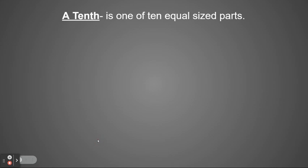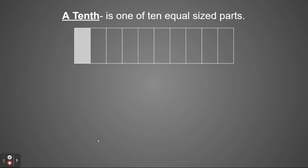First let's look at some vocabulary terms that we need to know. A tenth is one of ten equal parts. We've talked about fractions and we've seen it written as a fraction of one tenth. This is an example looking at it as a fraction — you have ten parts and one part is shaded, so this is one tenth.